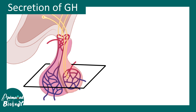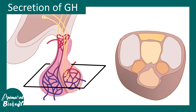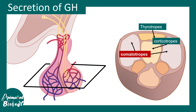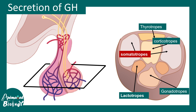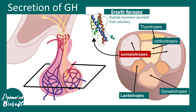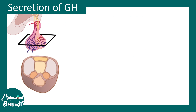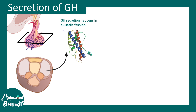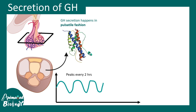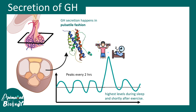If we cut a cross section of the anterior pituitary we see different zones: thyrotropes, somatotropes, corticotropes, lactotropes, gonadotropes, and others. The somatotrope region is where growth hormone is secreted. Growth hormone is a peptide hormone secreted from the pituitary in a pulsatile fashion, with peaks every two hours and a large peak during exercise or just after sleep.